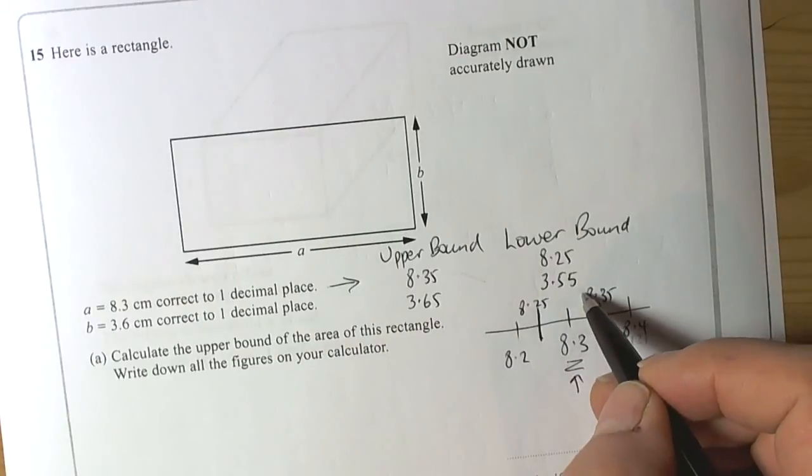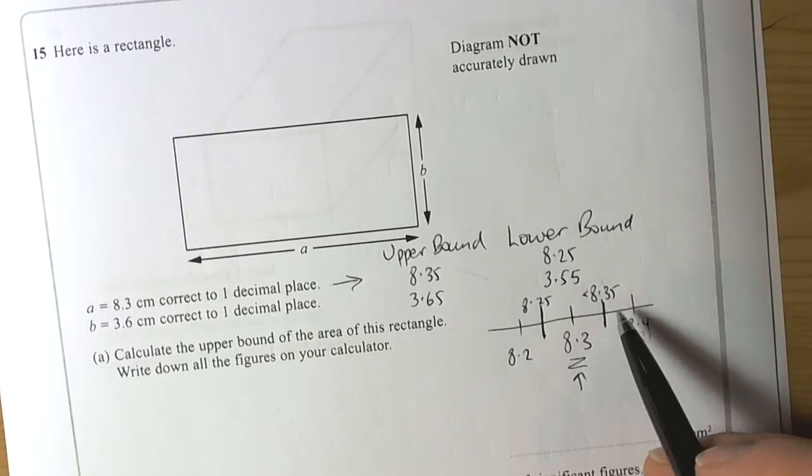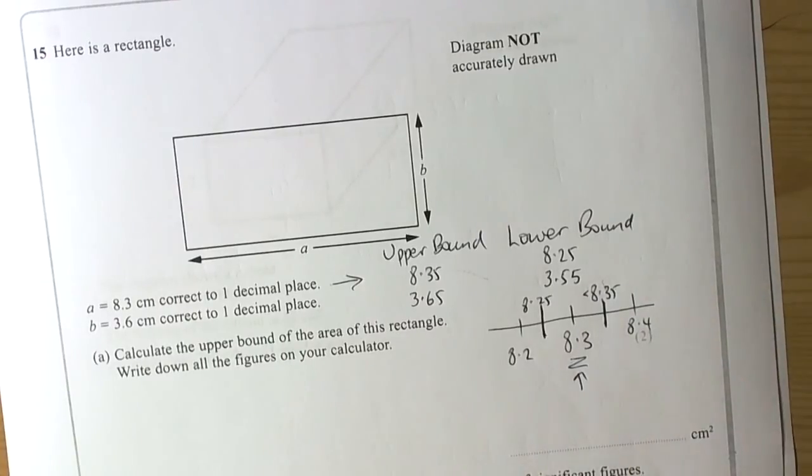They are boundaries. Although technically we should put a less than sign there because that boundary can't actually be happening. But it is a boundary, so we allow that number to have a 5 on the end.